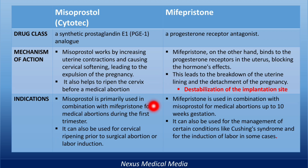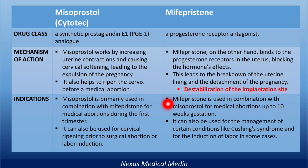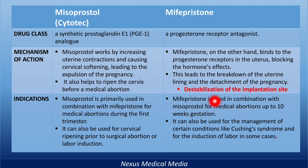Regarding indications, misoprostol is primarily used in combination with mifepristone for medical abortions during the first trimester. It can also be used for cervical ripening prior to surgical abortions or for labor induction. Mifepristone is used in combination with misoprostol for medical abortions up to 10 weeks of gestation, and can also be used for management of Cushing's syndrome and for induction of labor in some cases. You can see that the indications actually intermingle.